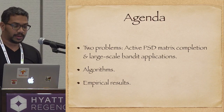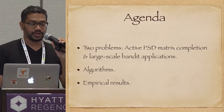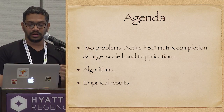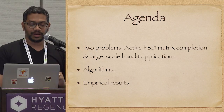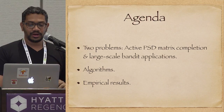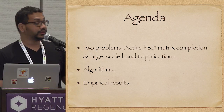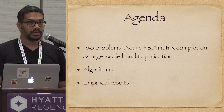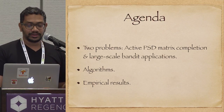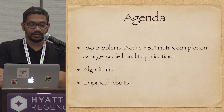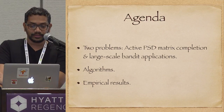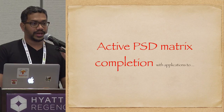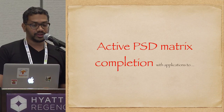I'm going to talk about two problems which might seem quite disconnected to start with, but I promise that there'll be a connection. The two problems are active positive semidefinite matrix completion and a certain large-scale bounded run. We'll define algorithms and we'll also look at empirical results for these algorithms.